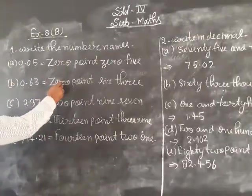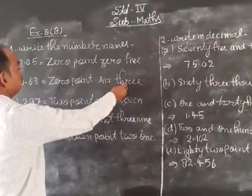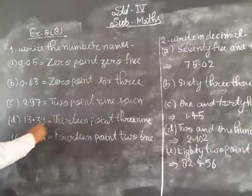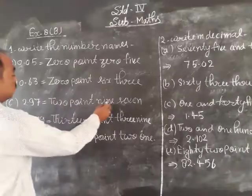Part number B: 0.63. Part number C: 2.97.